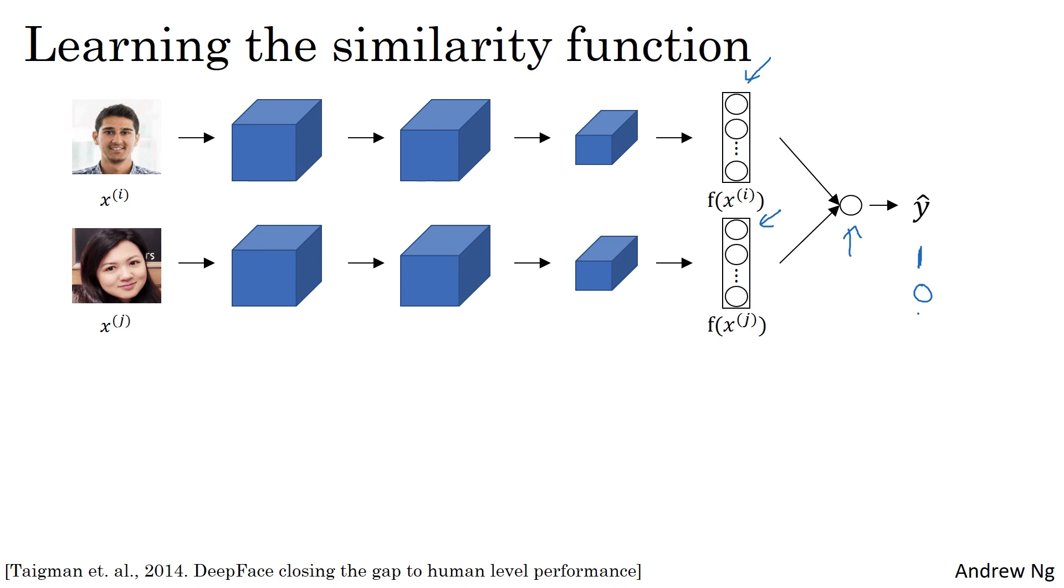This is an alternative to the triplet loss for training a system like this. Now, what does this final logistic regression unit actually do? The output y hat will be a sigmoid function applied to some set of features. But rather than just feeding in these encodings, you can take the differences between the encodings.